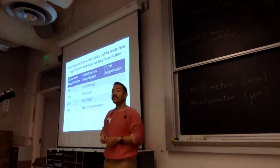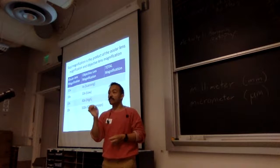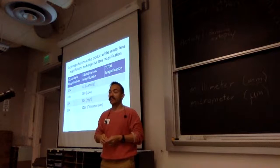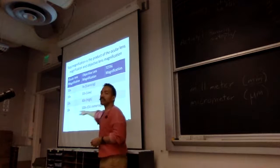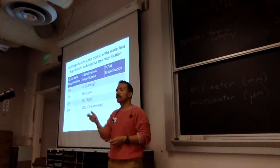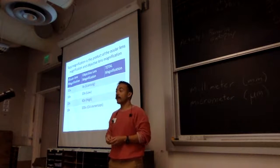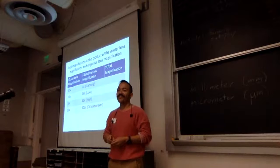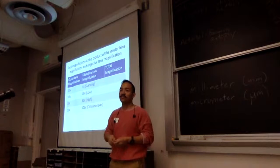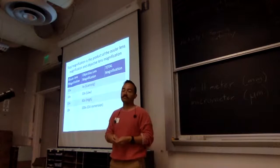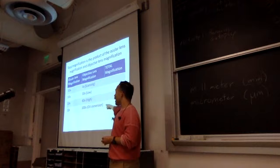This last one, the 100x, is an oil immersion lens. Without getting into the physics too much, you need to put a drop of oil underneath the lens to see it more clearly. If it comes to that, I'll show you how to use it, but we're primarily not going to use this. The other reason is — can everyone tell what you notice about the 100x? It's very close. There's a very high chance of you breaking the slide, which I've definitely done before when I started out. So we're not going to use this to start out. We're going to be using the scanning, low, and high power lenses.